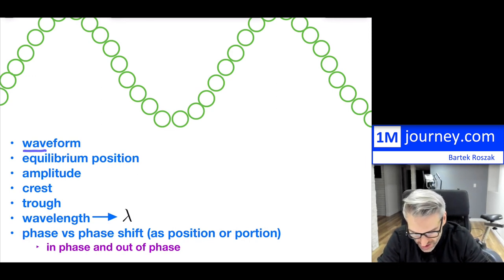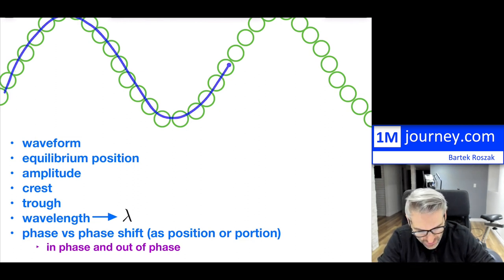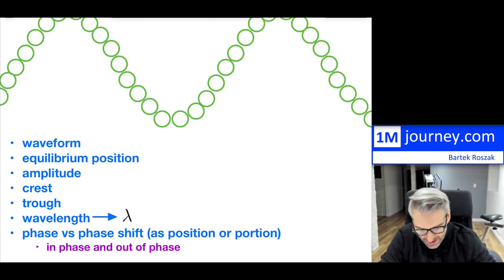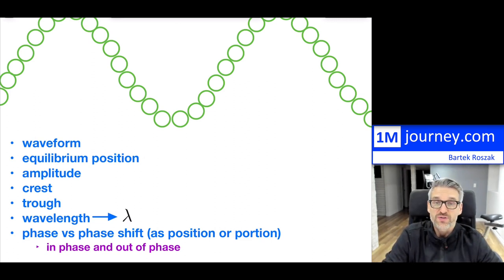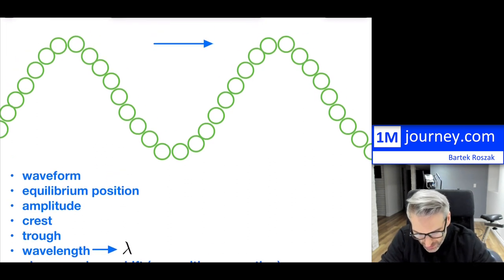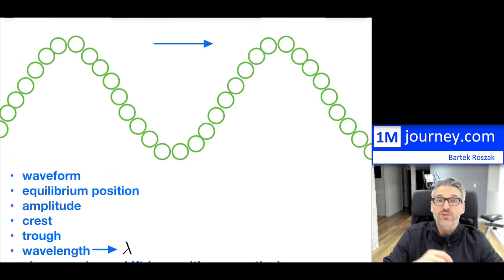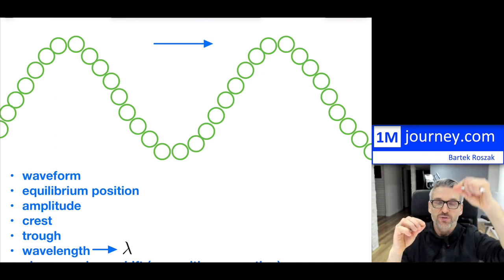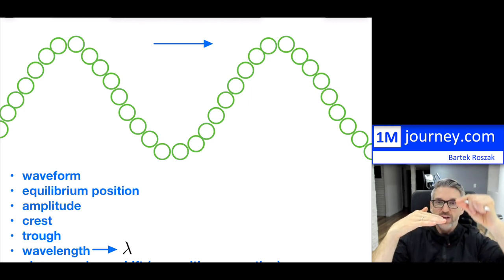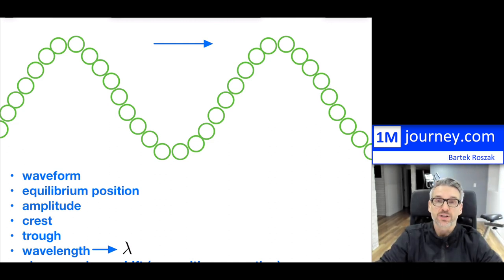The wave itself will take on some kind of a shape or form — we call that the waveform of this particular propagation. There is some kind of an equilibrium position within waves. The equilibrium position is the point where the particles are vibrating around. They're going up and down, and the midpoint of that vibration — as it goes up and down — that midpoint position is the equilibrium point.